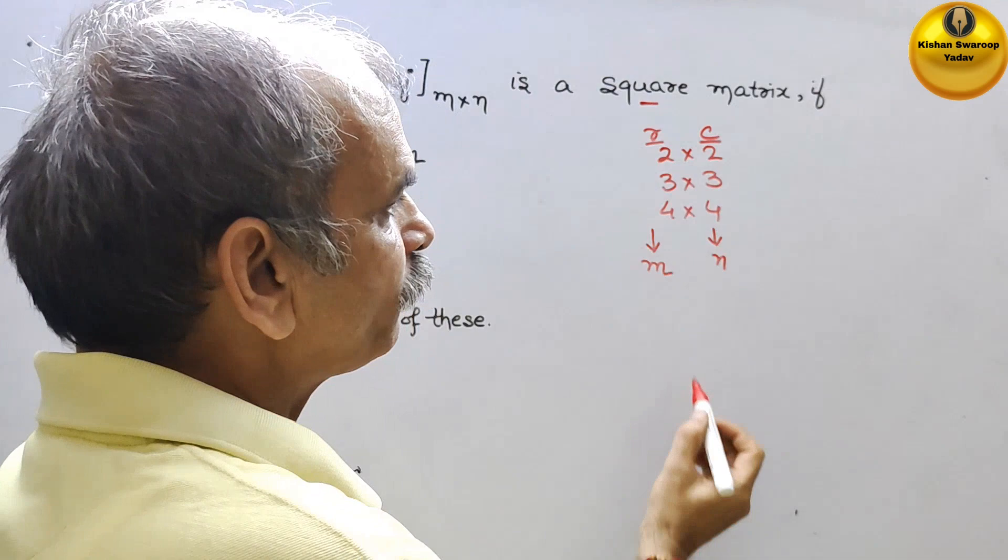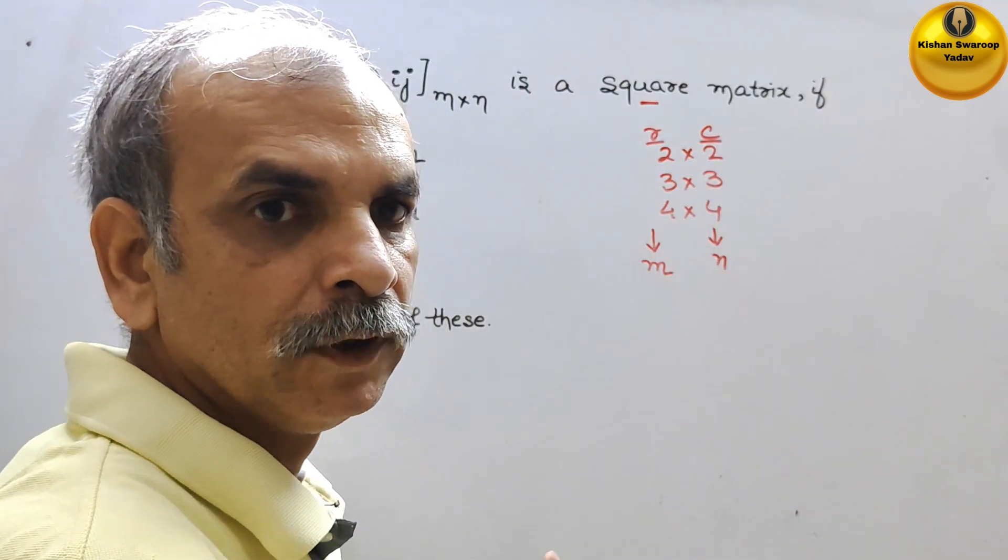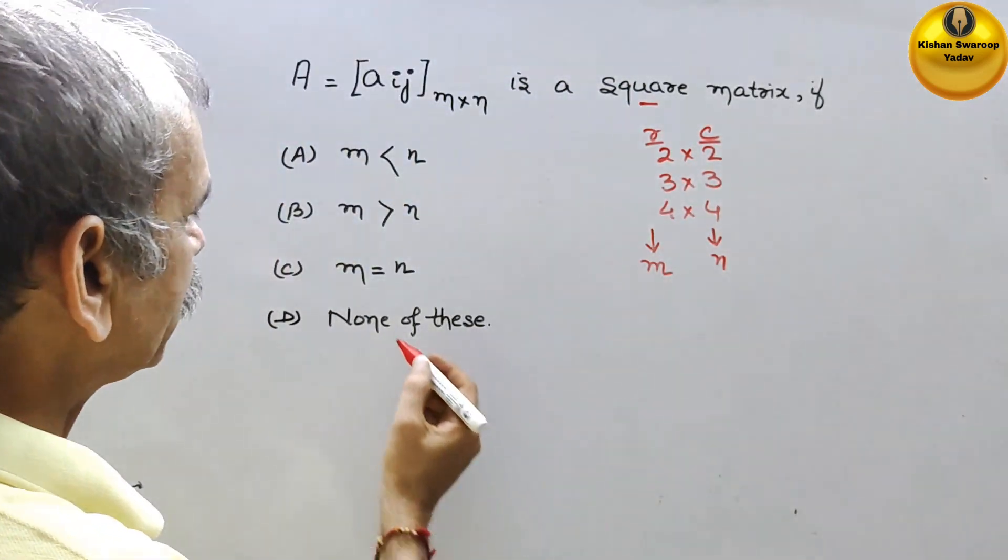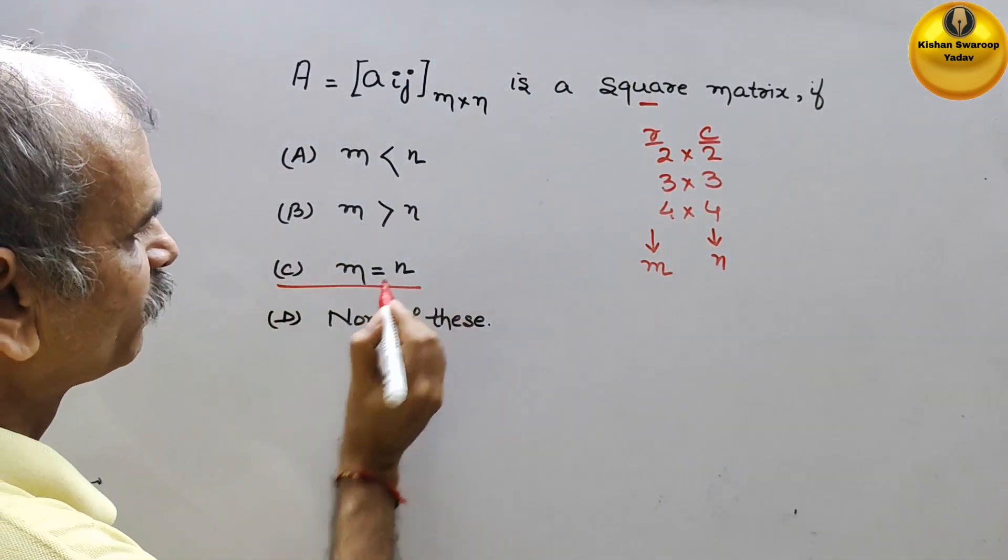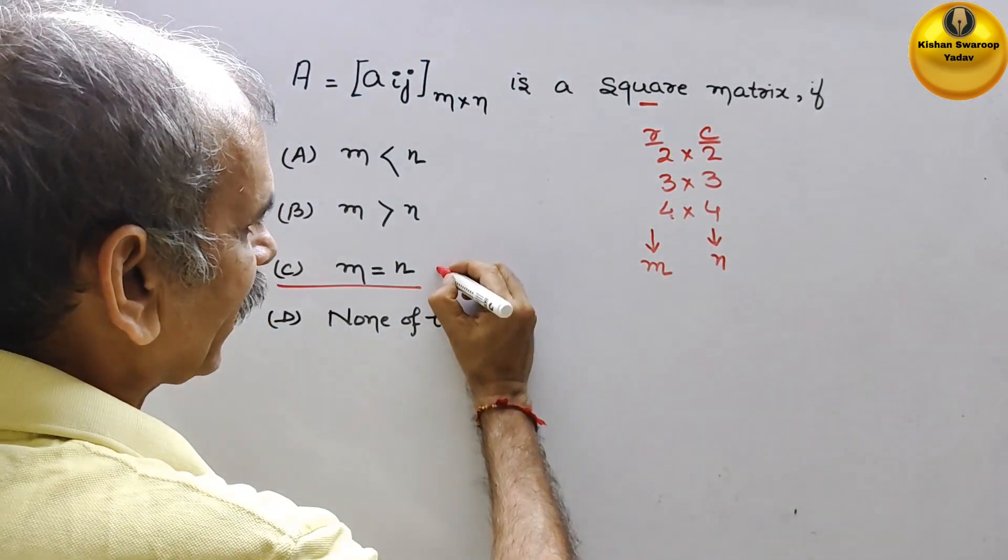So now if you see, what happened? Both are equal. So therefore, here option C is there. m is equal to n. So this is your correct option, m is equal to n.